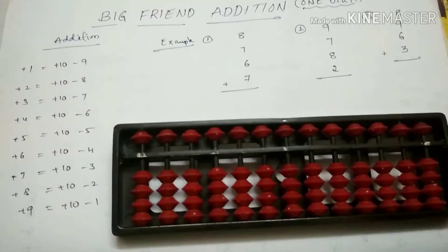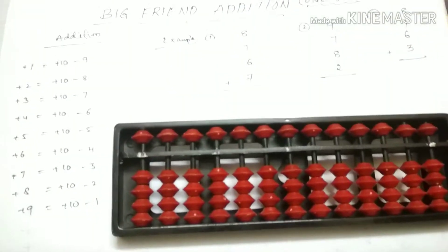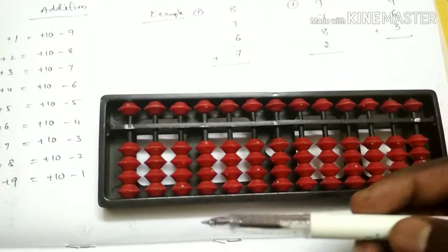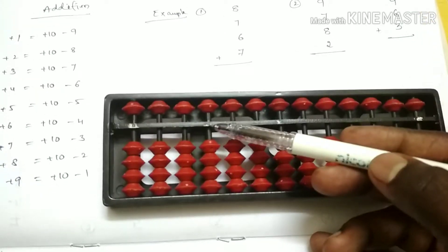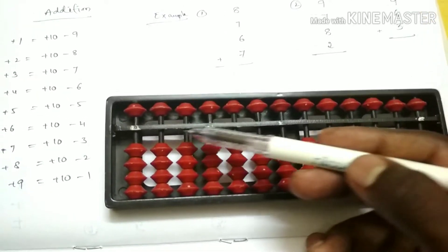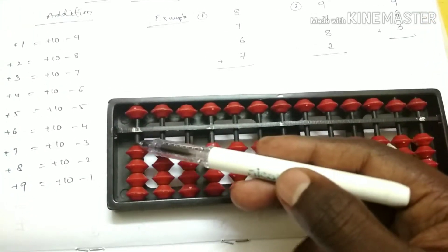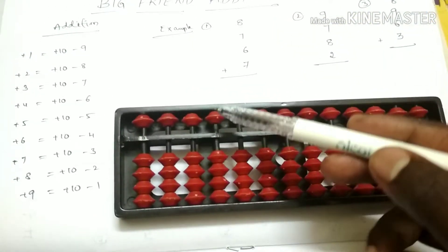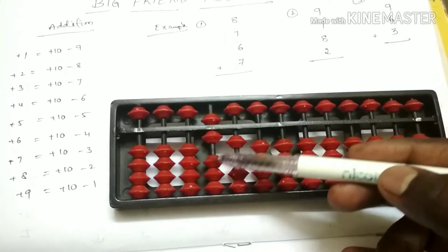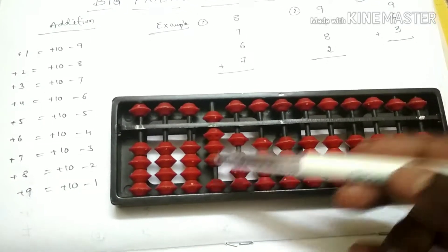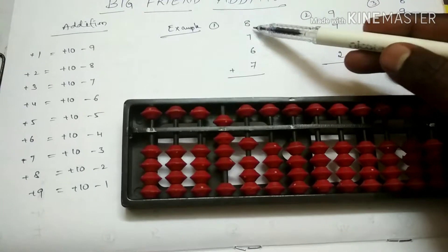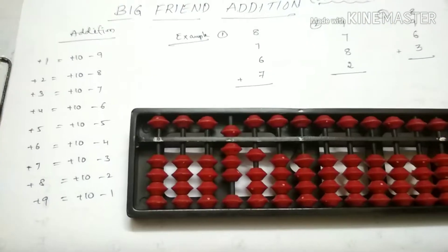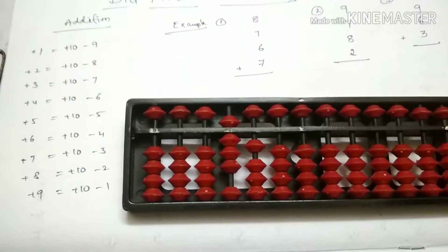What can we do with this big friend edition addition? We will assign one digit to 10,000. We ask: how do we add 8, 5, 6, 7, and 8? We will add 8 plus 7 — one digit.